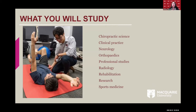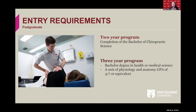If you decide to take the Master of Chiropractic degree, lots of the undergraduate basic sciences will be refreshed from the undergraduate degree or our own Bachelor of Chiropractic Science. In the masters we focus on chiropractic science, which are the technique units. The largest component of the master's program is the clinical internship — what we call clinical practice — which is a 12 calendar month period in the final year, spanning from November one year through to November the following year. It also includes subjects in neurology, orthopedics, professional studies, radiology, rehabilitation, research, and sports medicine.